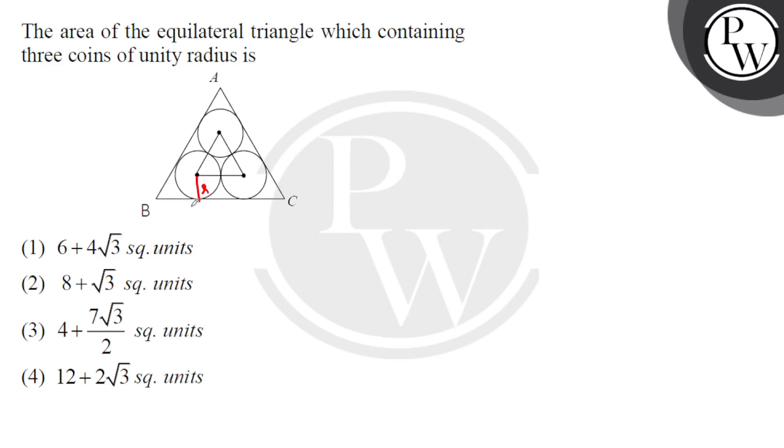So let's take radius small r, and this angle is basically 30 degrees. This is r tan 30°, then this is r, this is r, and then again r tan 30°.